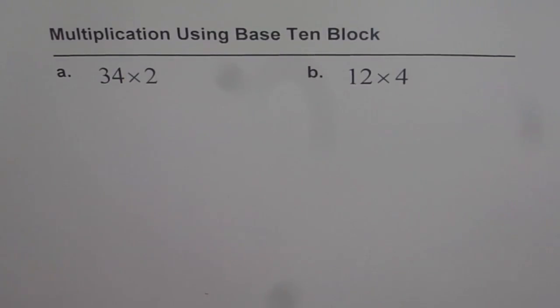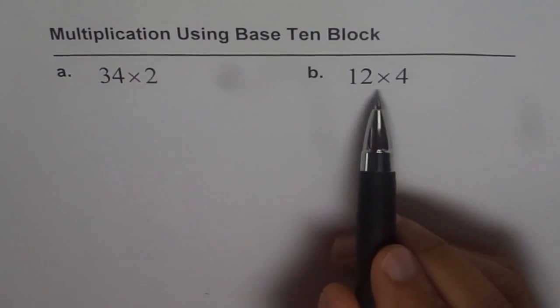Let us multiply big numbers with base 10 blocks. Here we have 34 times 2 and 12 times 4.